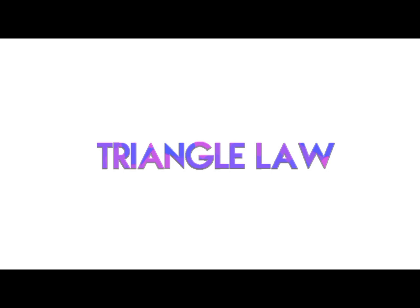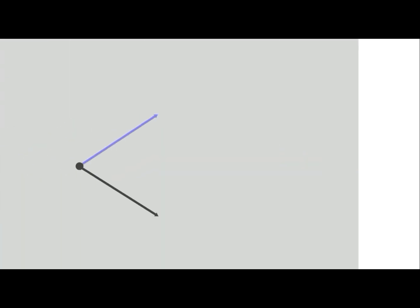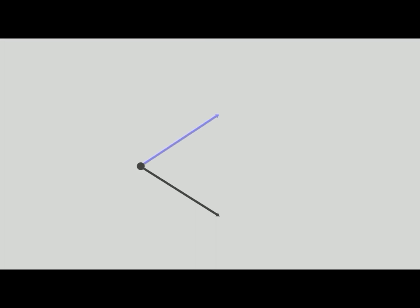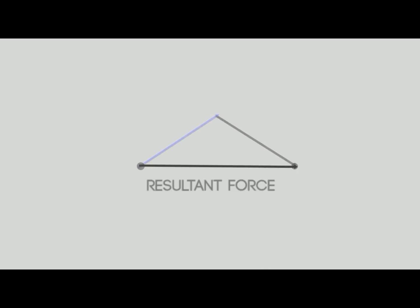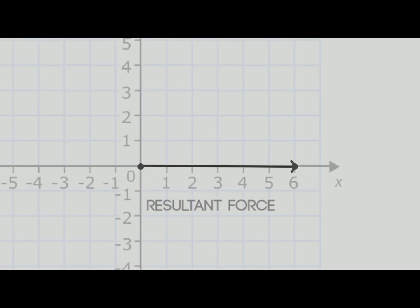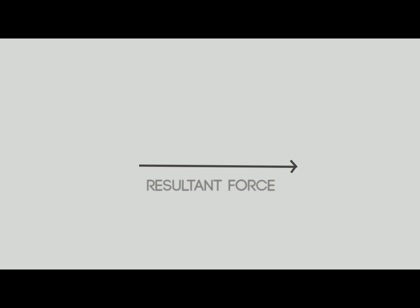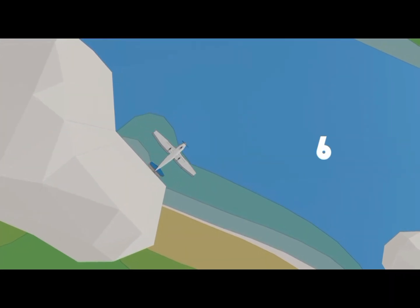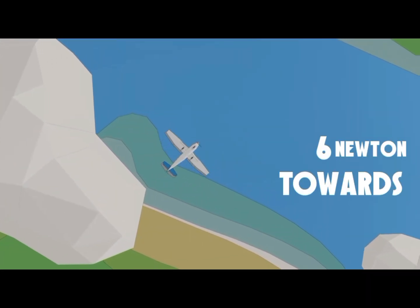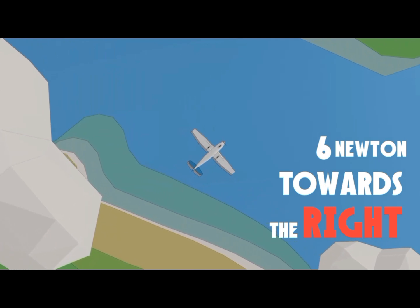Now this is the thrust of the plane and this is the force of the wind. We can use the triangle law to add these two vectors. Using the triangle law, the resultant of these two forces is given by the third arrow, which points directly towards the right. From our graph, the magnitude of this force is found to be six — that is, six newtons. So the final answer is that the plane will be moving with a force of six newtons towards the right.